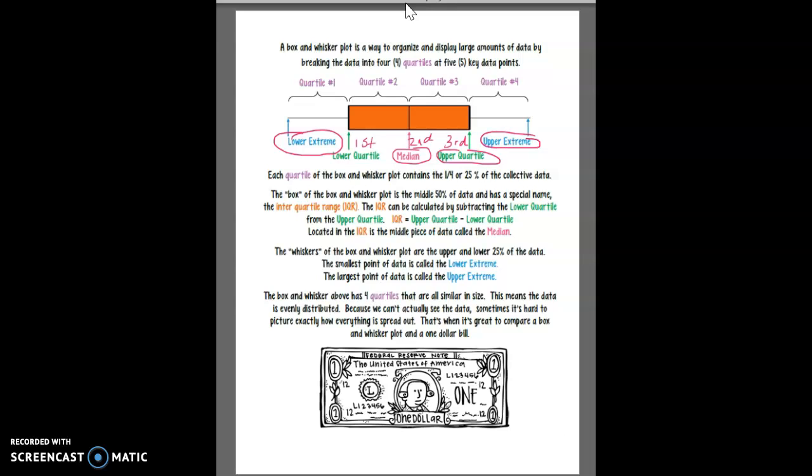The extremes are also sometimes called outliers depending on how far they are from the median. So each quartile of the box and whisker plot contains one-fourth or 25% of the whole data. The box of the box and whisker plot is made of the middle 50% of the data and has a special name, the inner quartile range.